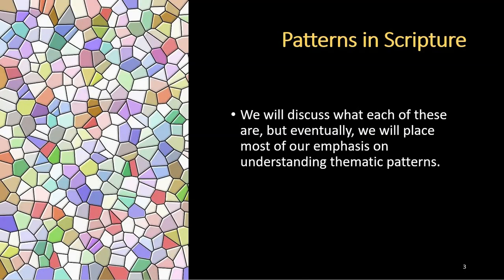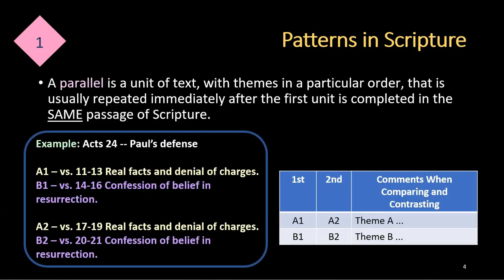We will discuss what each of these are, but eventually we will place most of our emphasis on understanding thematic patterns. A parallel is a unit of text with themes in a particular order that's usually repeated immediately after the first unit is completed in the same passage of Scripture. An example of this is found in Acts 24, where Paul defends himself from being accused of profaning the temple. In A1, which is verses 11-13, real facts and denial of charges are presented.